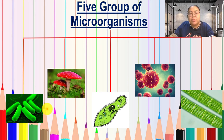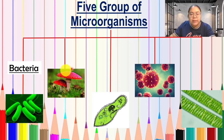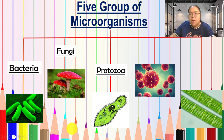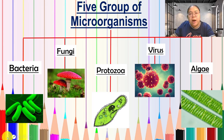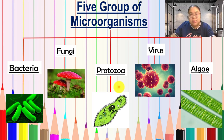Now, the important thing is the five groups of microorganisms we need to study today. The first one looks like a rod shape — we call it bacteria. The second looks like a mushroom — that is fungi. The third looks like a slipper shape — we call it protozoa. The fourth is the famous one — virus. The last looks like a leaf with green color — that is algae. Today we will study fungi, algae, and protozoa. The remaining two will be covered in another section.